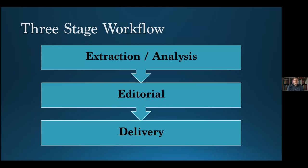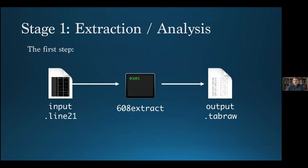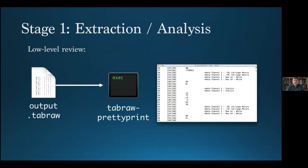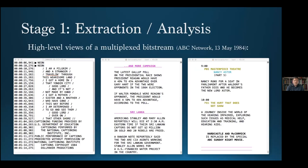With these two intermediate formats, we began to develop a small ecosystem of tools to work with data in this way, comprising a three-stage workflow. The first stage begins with the data extractor, which takes a Line 21 file as input and emits Tab Raw data as output. Other description programs to which that data can be piped or fed as a Tab Raw file were soon developed, ranging from low-level displays of transmitted data to fully exposing the content of complex caption streams.